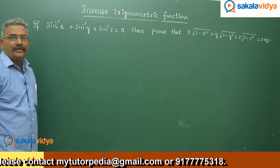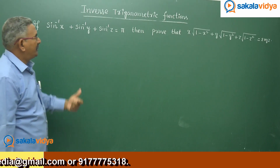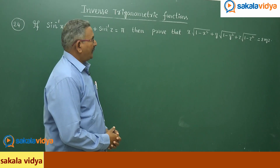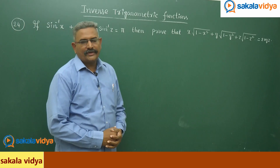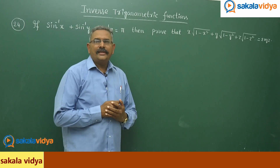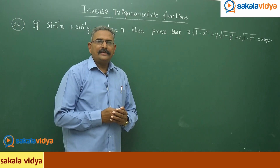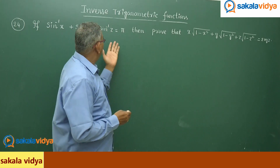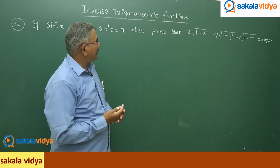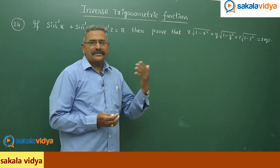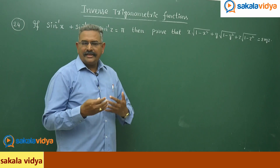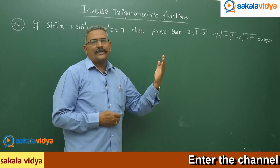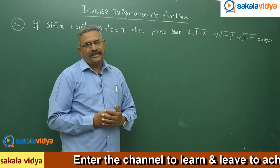Let us move to the next problem. If sin⁻¹x + sin⁻¹y + sin⁻¹z = π (180 degrees), then prove that x√(1−x²) + y√(1−y²) + z√(1−z²) = 2xyz. In this case also, let sin⁻¹x = A, sin⁻¹y = B, sin⁻¹z = C. That means A + B + C = π. We take the left-hand side with x replaced by sin A, y by sin B, z by sin C, and we need to prove it equals 2 sin A · sin B · sin C.